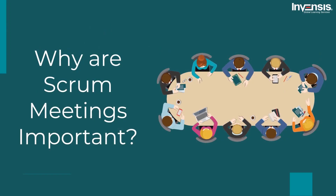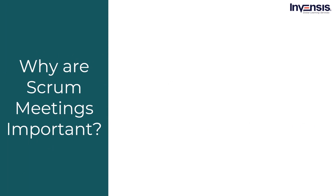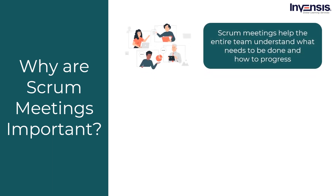Let us understand some benefits of Scrum meetings and why they are important. The Scrum team operates on a tight schedule because each sprint lasts about 4 weeks, so it is very important to ensure that the entire team moves towards the same goal. First, Scrum meetings help the entire team understand what needs to be done and how to progress, providing each team member with an understanding of what roles they play in the sprint.